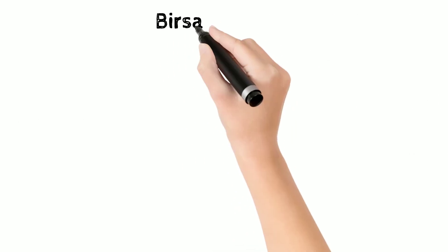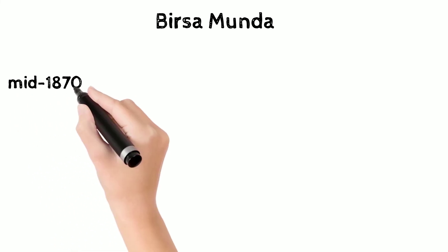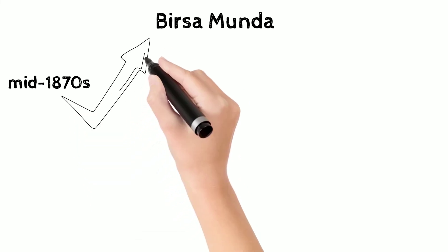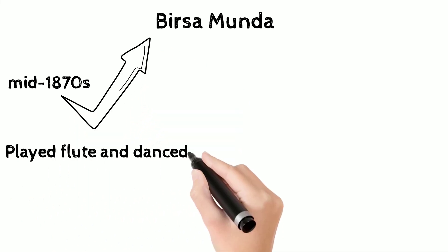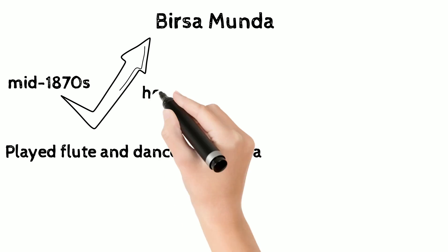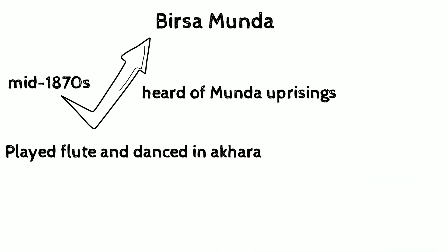Birsa Munda was born in the mid-1870s. He played the flute and danced in the akhara. He heard of the Mundas' uprisings — the revolts that had taken place in ancient times against the dhikus.